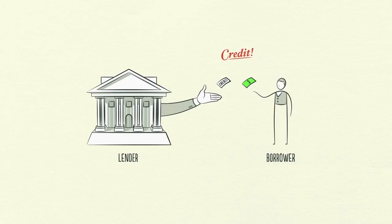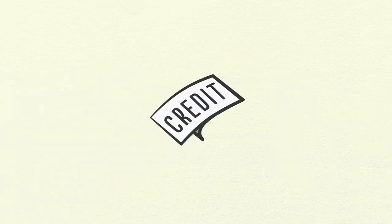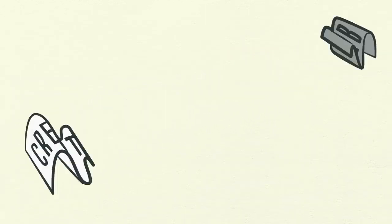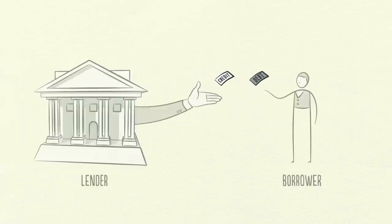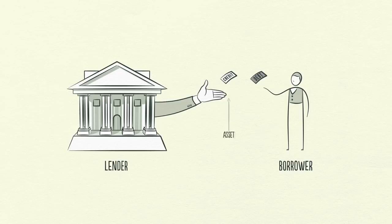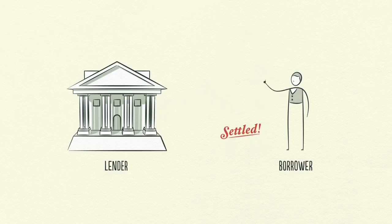Any two people can agree to create credit out of thin air. That seems simple enough, but credit is tricky because it has different names. As soon as credit is created, it immediately turns into debt. Debt is both an asset to the lender and a liability to the borrower. In the future, when the borrower repays the loan, plus interest, the asset and the liability disappear and the transaction is settled.